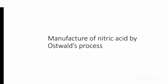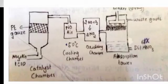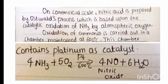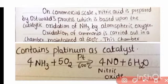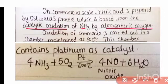Manufacture of nitric acid by the Oswald process. Commercially, nitric acid is prepared by the Oswald process, which is based on the catalytic oxidation of ammonia by atmospheric oxygen.